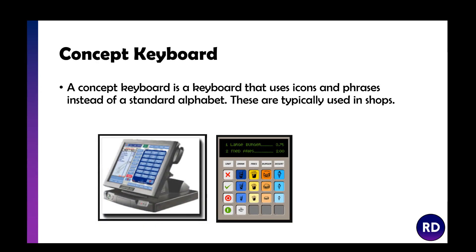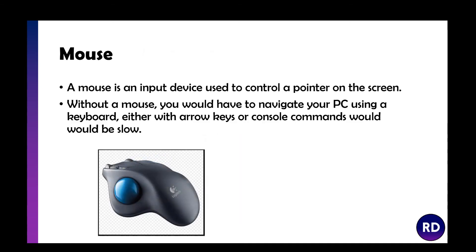We've also got a concept keyboard, which is a keyboard that uses icons and phrases instead of an alphabet. For example, instead of typing 'burger and chips,' you can press the fries button or the burger button and select large, medium, or small — it speeds things up. Then we've got a mouse, which is an input device that allows you to control a pointer on the screen — it's a pointing device.